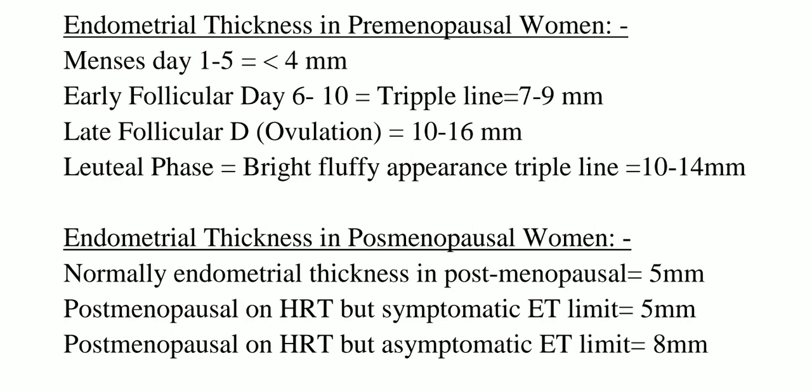In the premenopausal stage, different cutoff values apply by cycle phase. In days 1 to 5 (menstrual phase), endometrial thickness should be less than 4 mm. In the early follicular phase, when we see the triple line, endometrial thickness should be 7 to 9 mm; more than 9 mm can be considered abnormal.